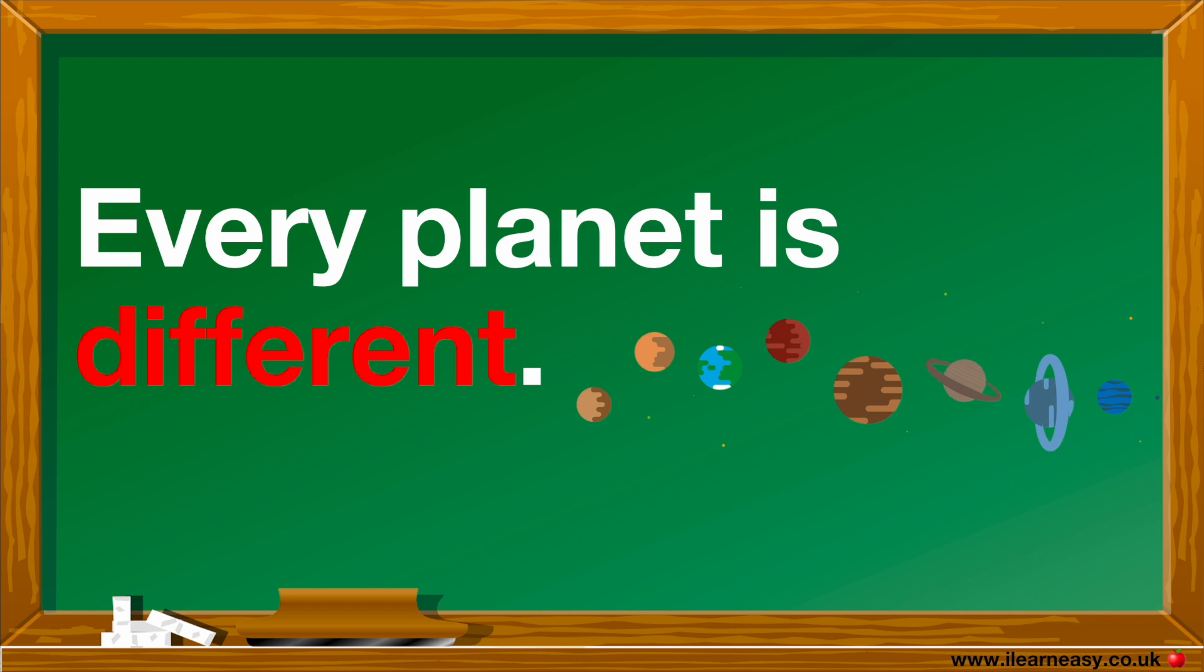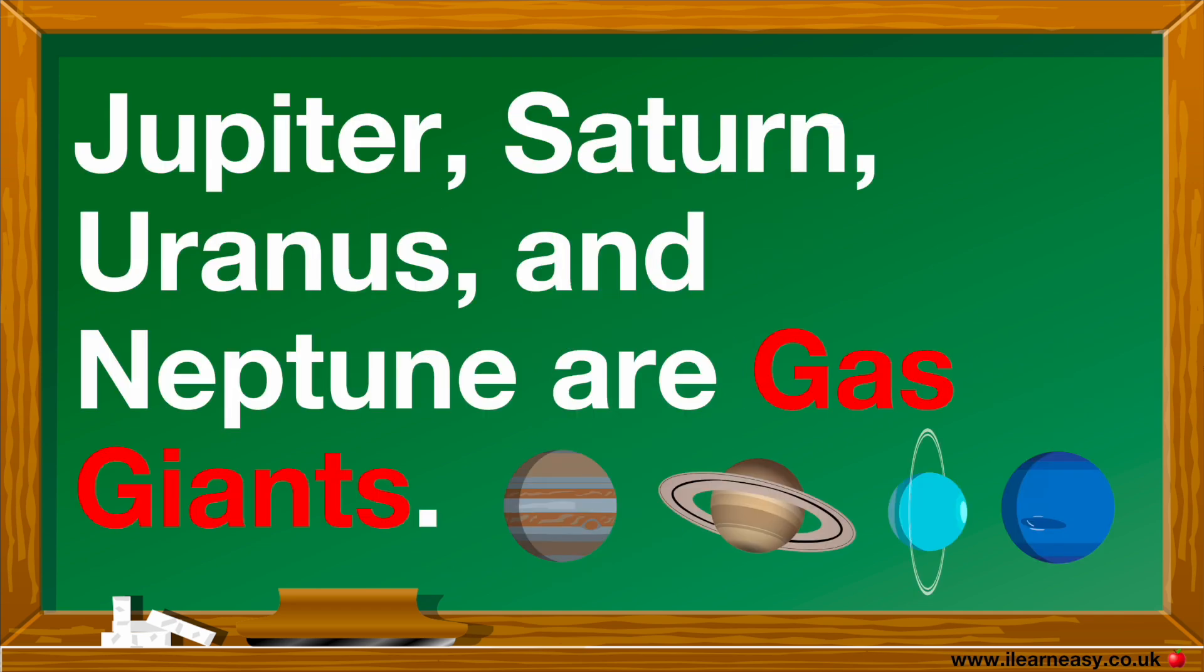Jupiter, Saturn, Uranus, and Neptune are gas giants. They're made of gases, helium and hydrogen.